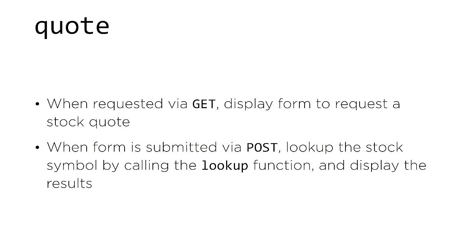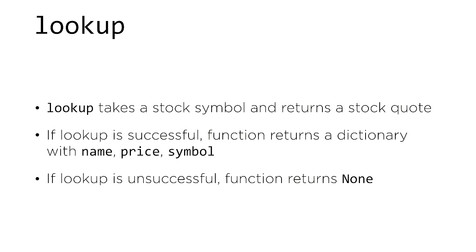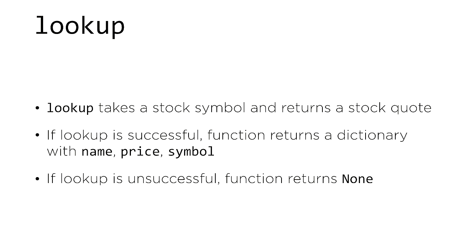Once users can register, next allow them to look up stock quotes. In your quote route, accept two request methods — GET and POST. If a user accesses it via GET, display a form letting the user request a stock to look up. When the form is submitted via POST, look up that stock symbol by calling the lookup function and display the results. The lookup function, defined in helpers.py, takes a stock symbol and returns a stock quote. If successful, it returns a dictionary with the stock's name, symbol, and current price. If the symbol doesn't exist, return an apology.